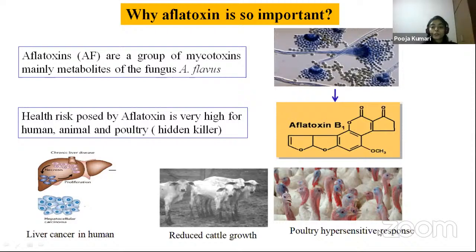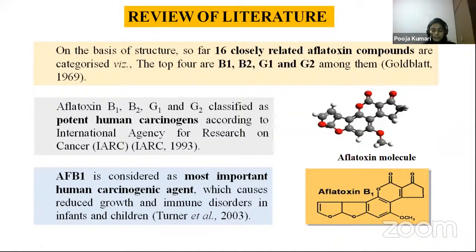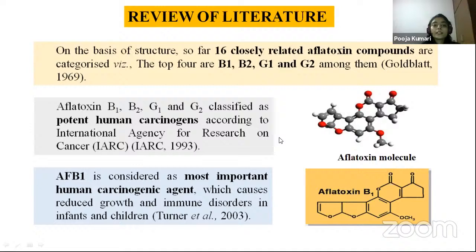Till today, 16 closely related aflatoxin molecules have been reported. Among these, four — AFB1, AFB2, AFG1, and AFG2 — are potent human carcinogens according to the International Agency for Research on Cancer. Among these four, aflatoxin B1 is the most important human carcinogenic agent, particularly targeting immune disorders in infants and children.